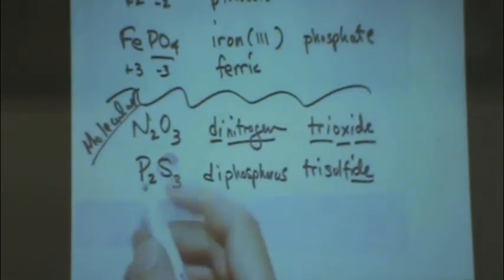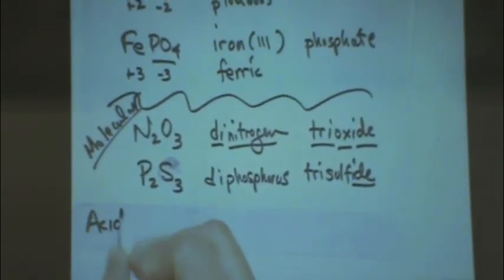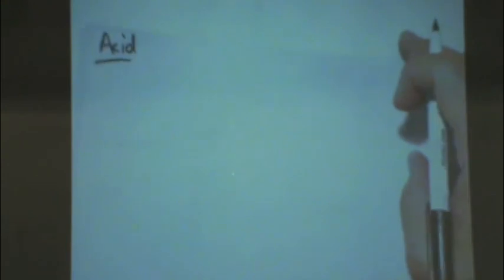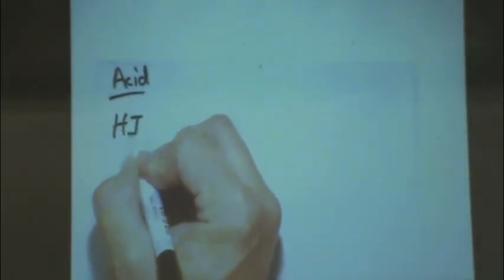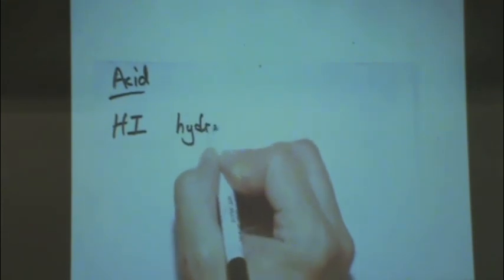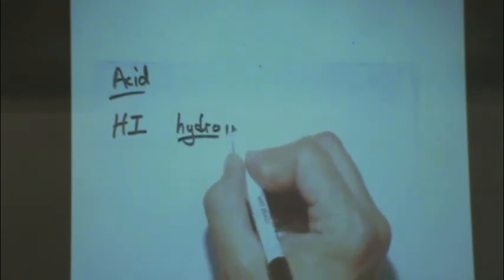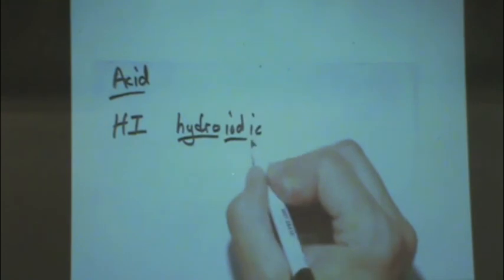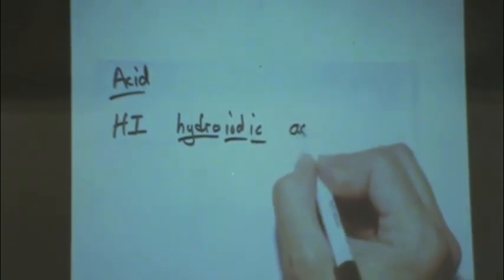And then the last category is the acid category. We're going to recognize the acids. There's going to be an H at least in front. And that's how we're going to recognize our acids. In 2B you'll learn more about acids. But it could be something like HI. If there's only two different types of elements, then we would call this hydro. This would be a binary hydro as a prefix. Iod is the stem name. Ic is the suffix. Last name is always acid.